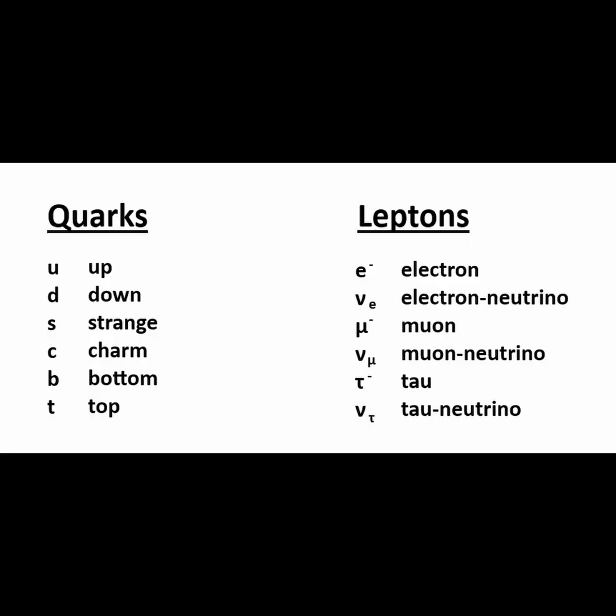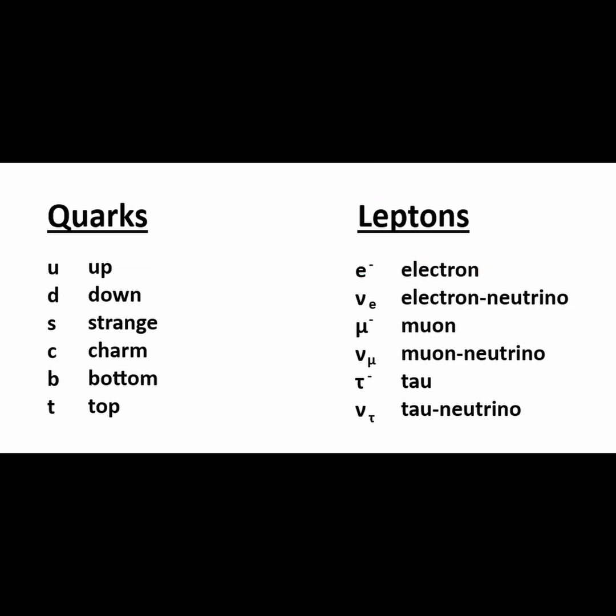There are only 12 fundamental particles that comprise the visible universe. We can break down these particles into two main groups: quarks and leptons. All of these particles are considered to be fundamental, meaning that they are whole, not made of any other particles, and there are no internal parts or components within them.